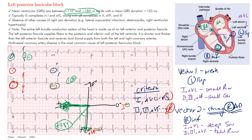The QRS duration tends to be within normal limits — less than three small boxes or 120 milliseconds — though it may be slightly prolonged if there's an underlying intraventricular conduction delay. You also need to rule out other causes of right axis deviation: absence of lateral MI, dextrocardia, or right ventricular hypertrophy is required before making this diagnosis. If right ventricular hypertrophy is present, do not code it together with left posterior fascicular block.